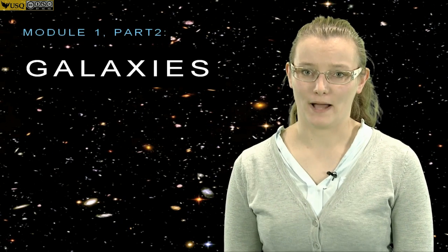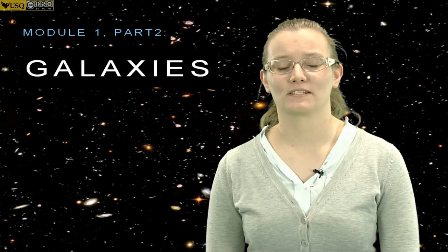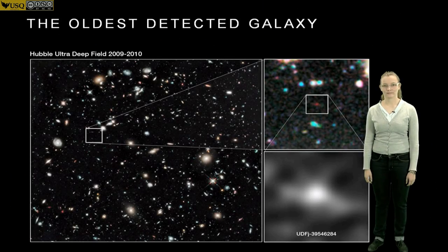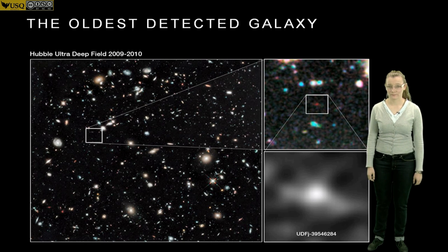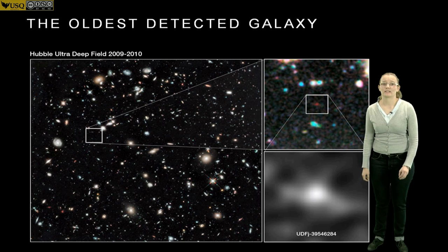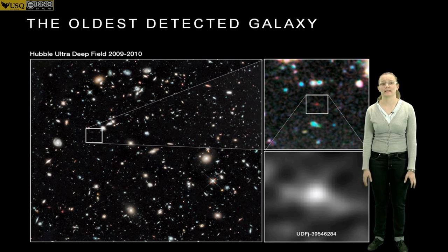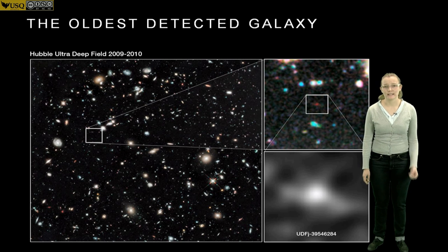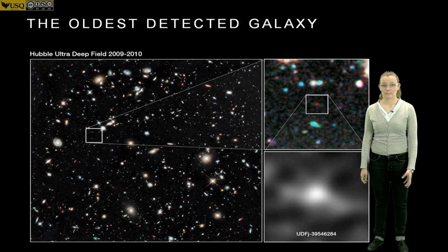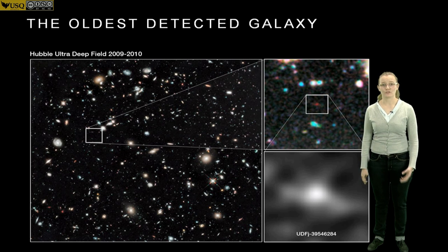Galaxies are a favourite topic of mine because you get images like this one. This is a picture of the oldest galaxy we have detected so far. In this little box is a red dot, and that red dot is light coming from a galaxy that was formed right at the beginning of our universe. In this image, almost every point you see is a galaxy. This is an amazing image, taken from the Hubble Ultra Deep Field.